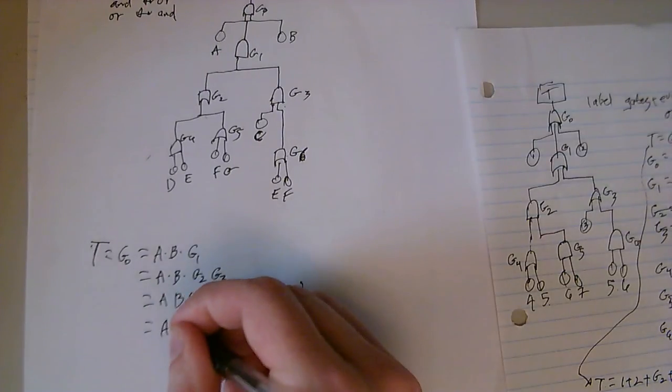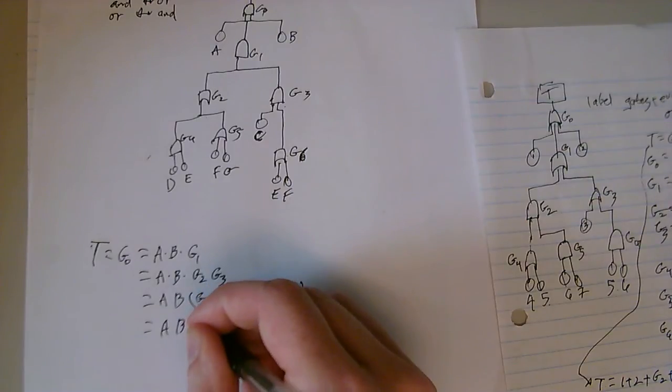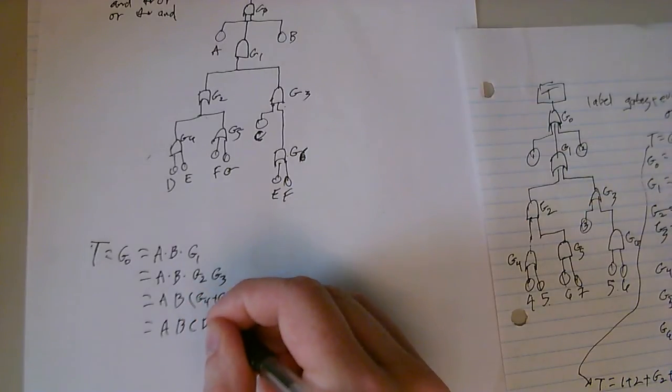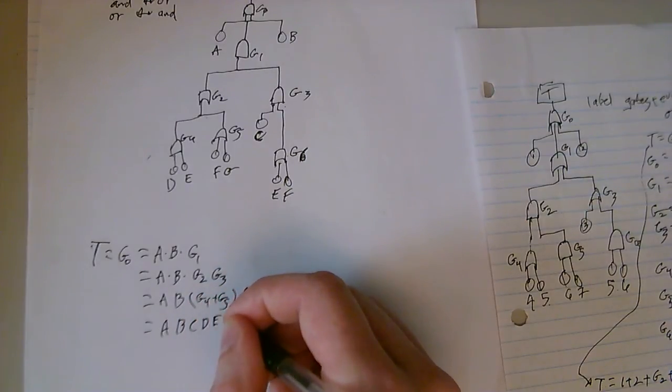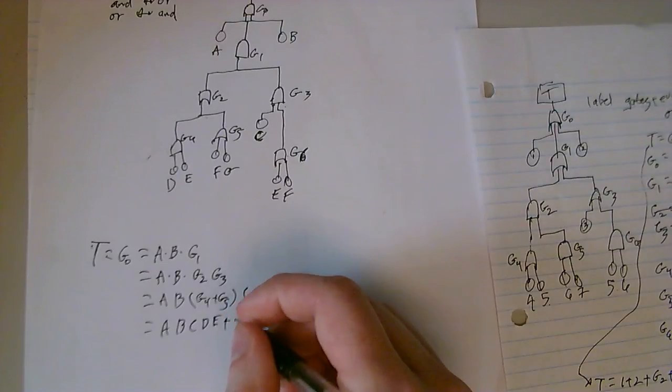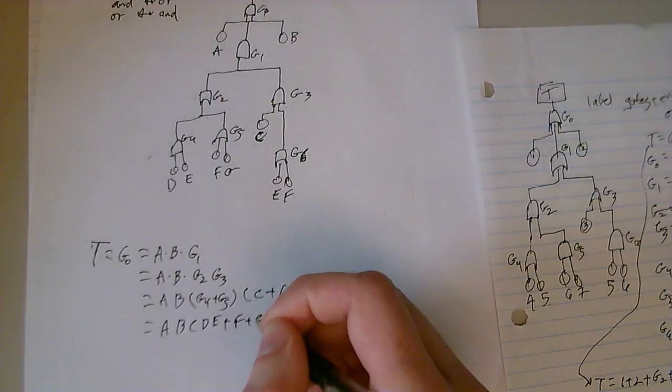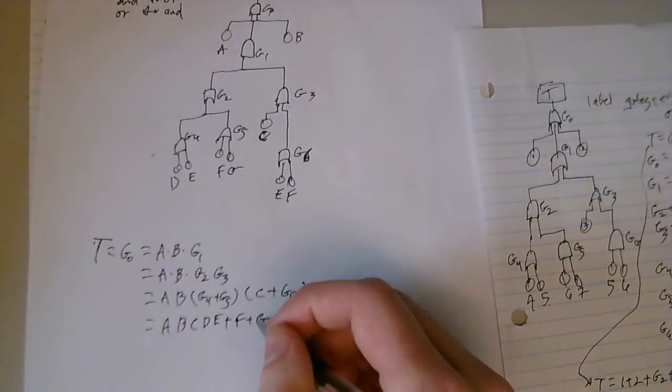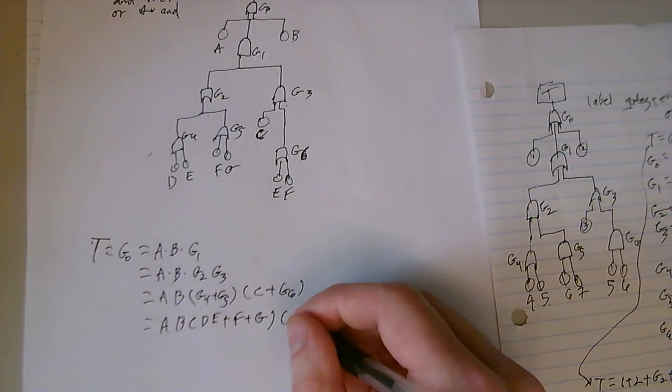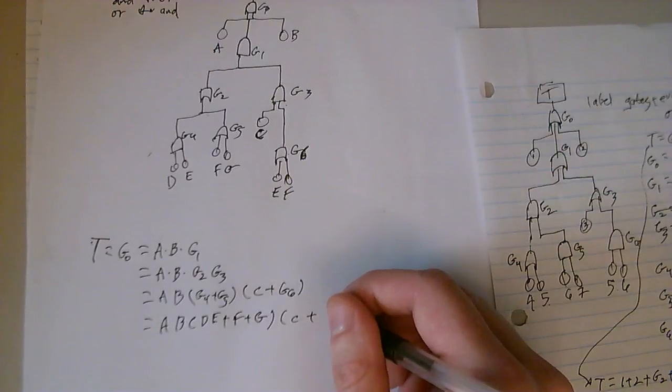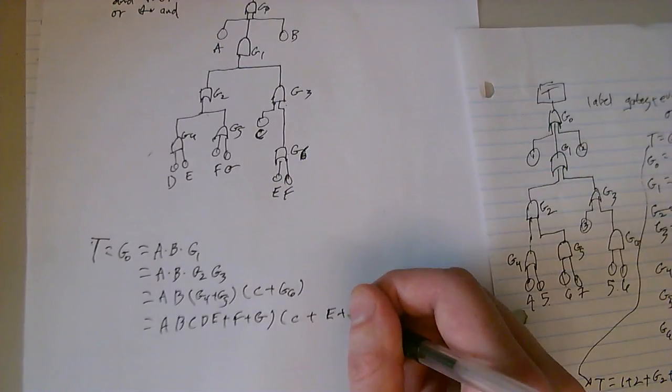Continuing to expand this out, A, B, G4 equals D, E plus F plus G. That's an OR gate there, so it's plus C plus G6 is an OR gate, so we have E plus F.